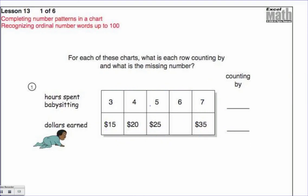Okay, the top numbers here are counting by one: three, four, five, six, seven. The bottom numbers are counting by five or five dollars. Either answer is a good answer. And so the missing number: 15, 20, 25, 30. This is $30. Pretty simple.